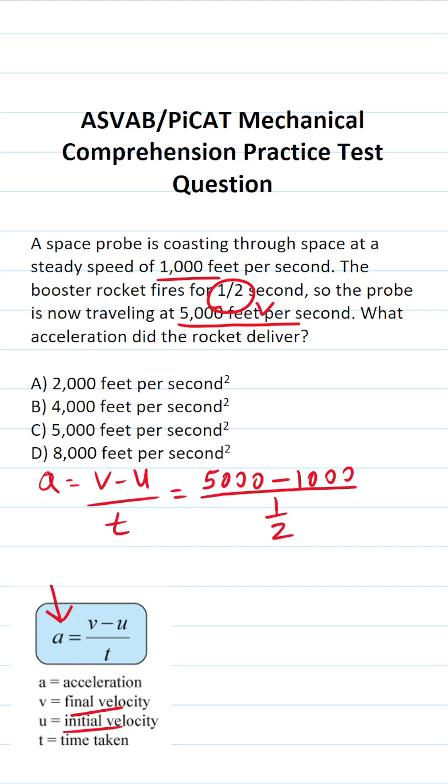By doing this math, we'll calculate acceleration. 5,000 minus 1,000 is 4,000, so this becomes 4,000 over one-half.